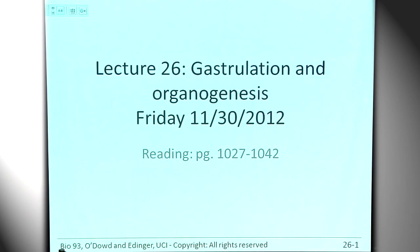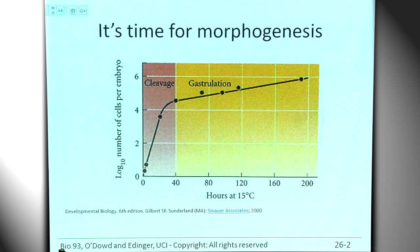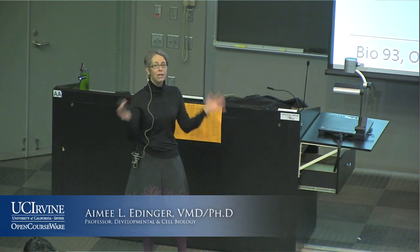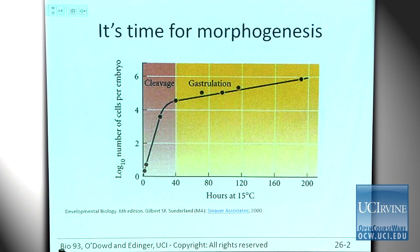Today we're going to talk about gastrulation and organogenesis. Last time we talked about cleavage — the point of cleavage phase was to generate lots of cells. Now you have a bunch of cells that you can pattern, and during gastrulation, which in humans happens about two weeks after fertilization, you're going to start massive changes in shape, patterning, and determining different cells.